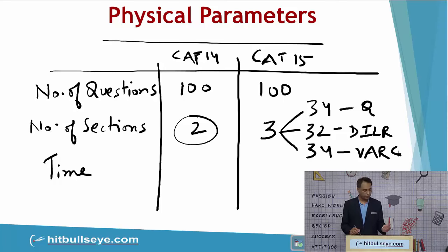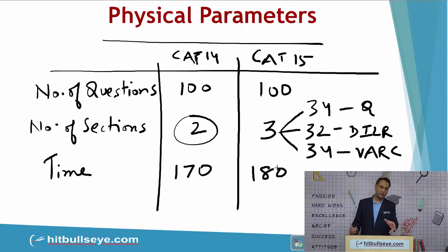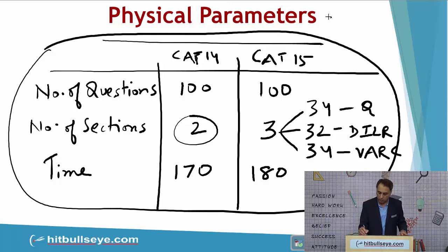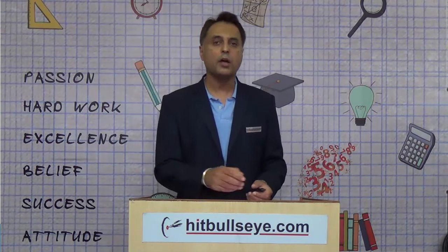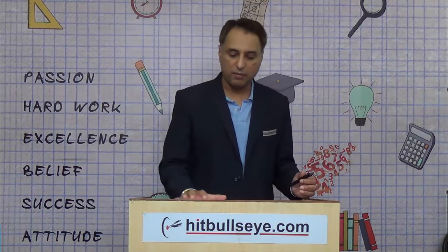The time allotted was 170 minutes in CAT 14 and 180 minutes in CAT 15. What this reflects is that all these physical parameters introduce an element of change in the way the test is conducted — and this is precisely what managers are supposed to handle: constructively and successfully managing change. As a test taker, if you can think on your feet and manage that change right then and there, you are better equipped to respond to the CAT challenge.